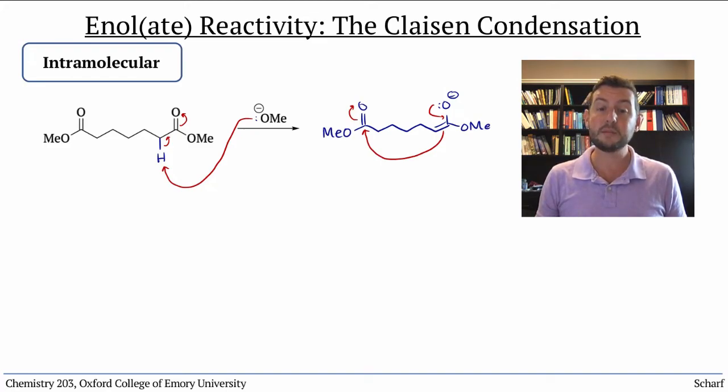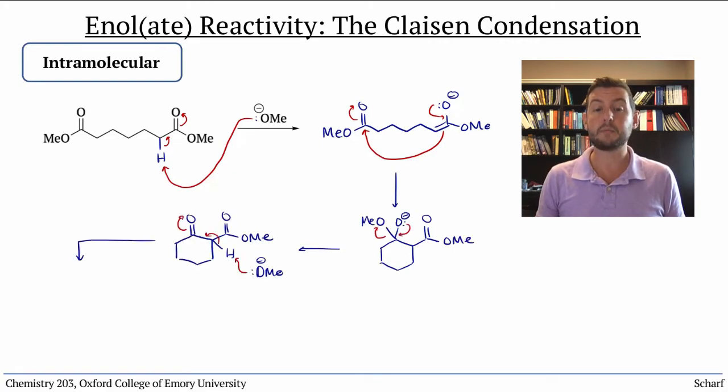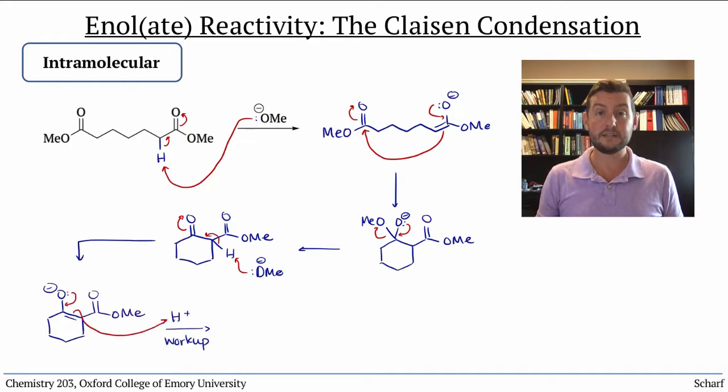For example, when treated with base, this diester reacts with itself to cyclize, producing a new six-membered ring. After acid workup, this is the product.